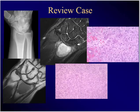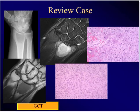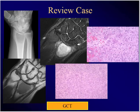Wrist pain, this radiograph — this is an easy one. What is it? Giant cell tumor. You'll definitely see giant cells. You'll definitely see osteosarcoma. These are all examples of previous questions.